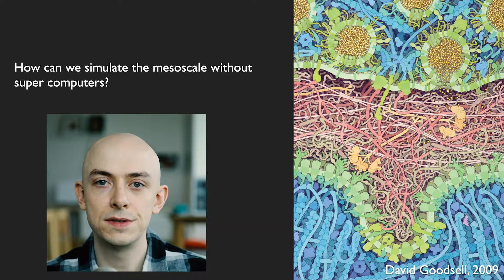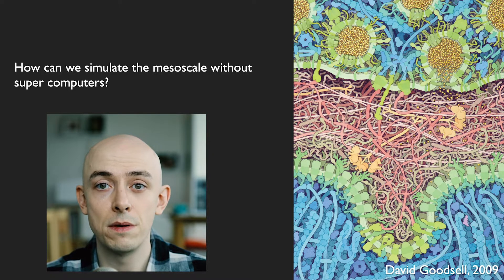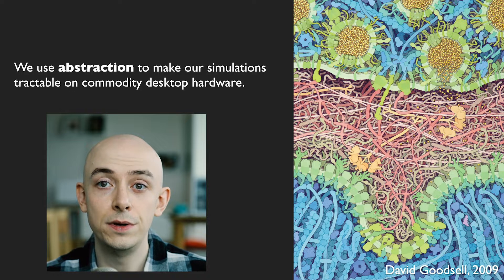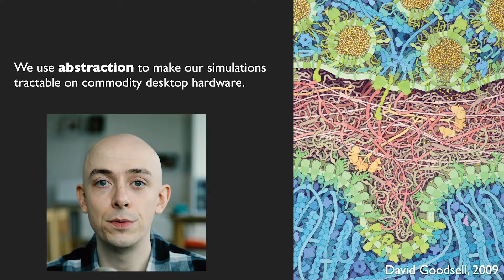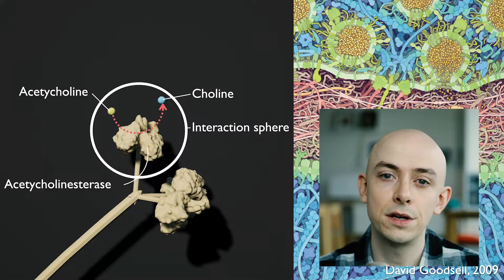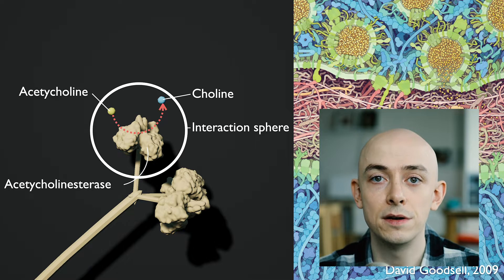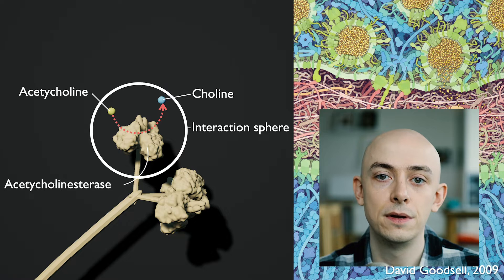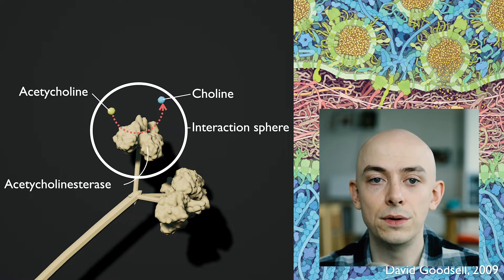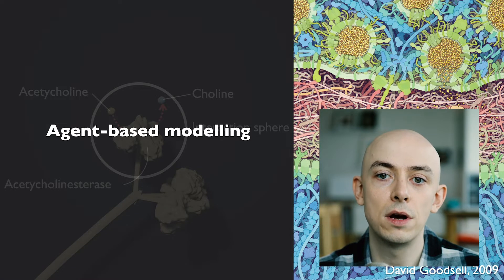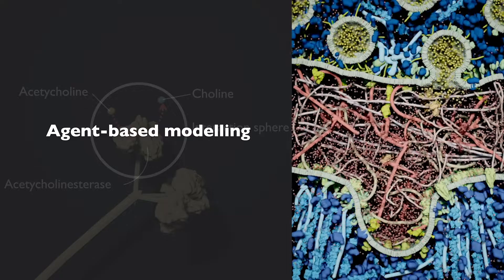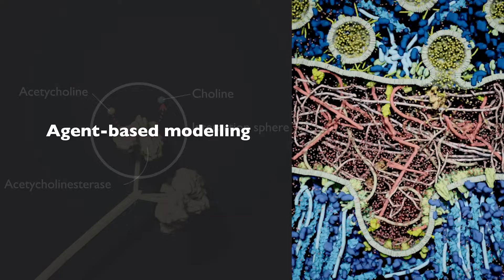Scientists use supercomputers to simulate atomic scale models of the mesoscale. To achieve real-time simulation on commodity hardware, we use model abstraction. To create a model, we review the scientific literature to develop simple interaction behaviors between pairs of molecular species. For example, this rule converts acetylcholine into choline when it interacts with acetylcholinesterase. This type of modeling is called agent-based modeling. With enough of these rules, we can model a neuromuscular synapse in real-time.